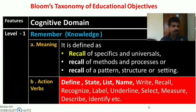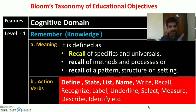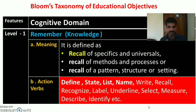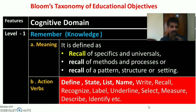The first level of the cognitive domain is remember, which corresponds to knowledge. It is defined as recall of specifics and universals, symbols and compounds, specific and general facts, recall of methods and processes, and recall of patterns, structures, and settings. Anything that a student recalls comes under remember.